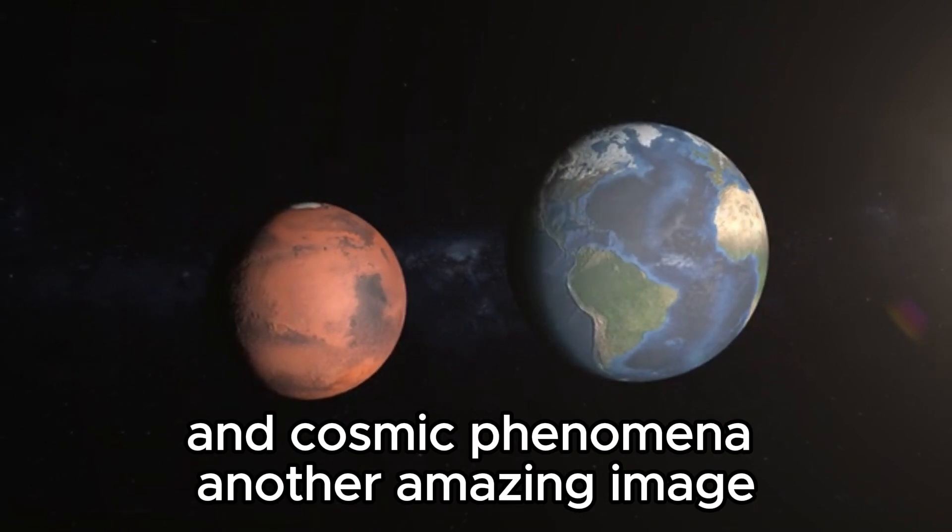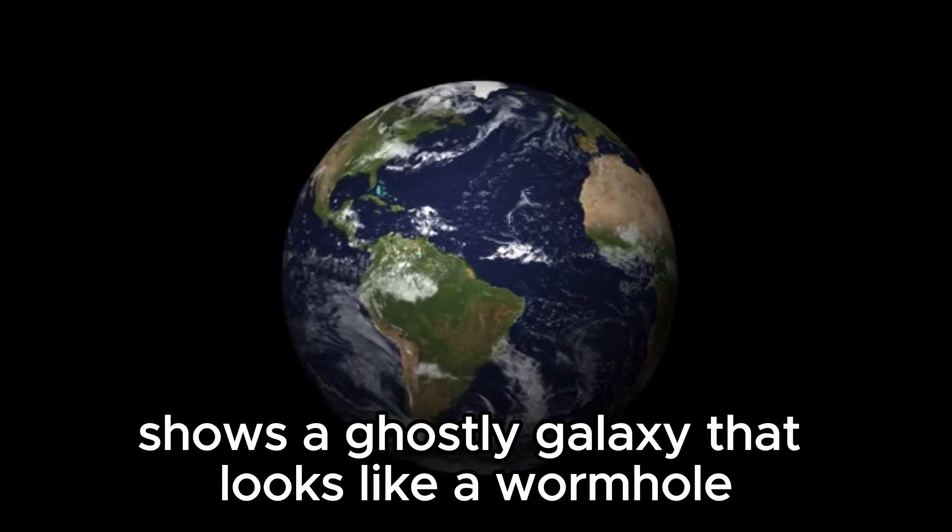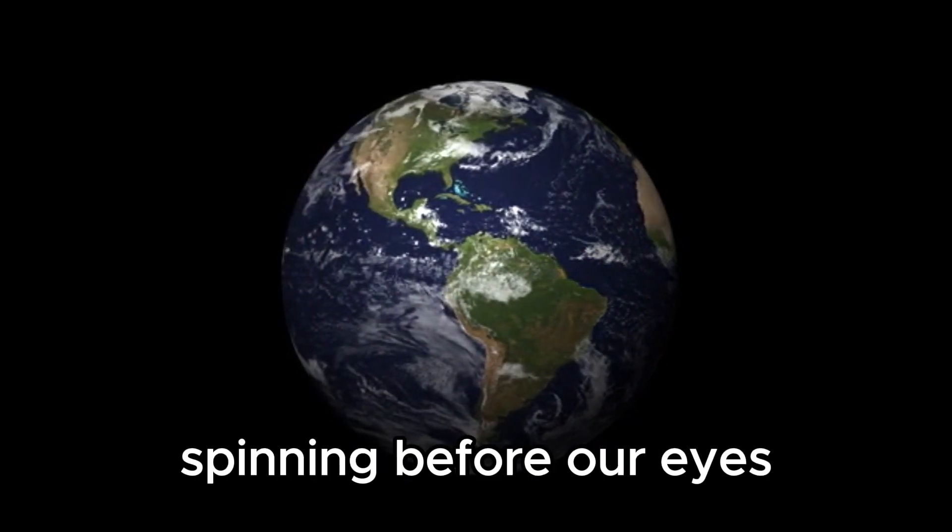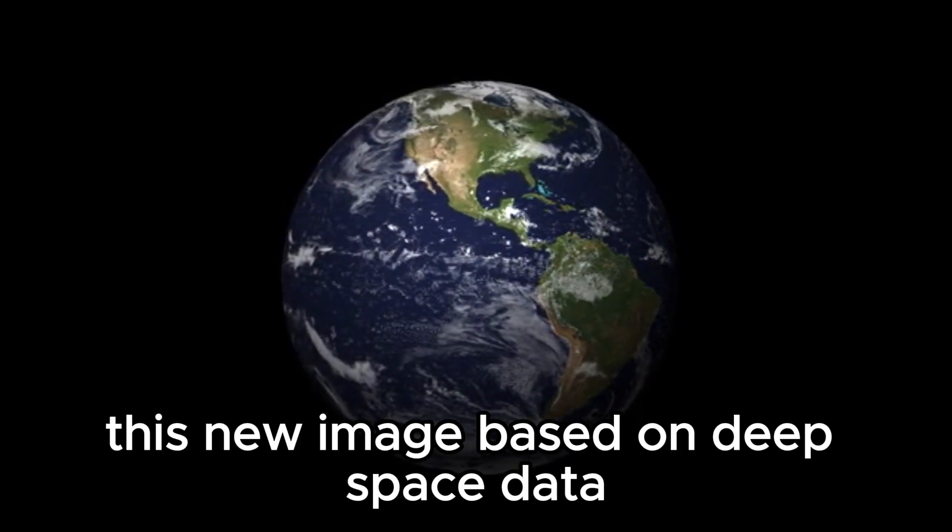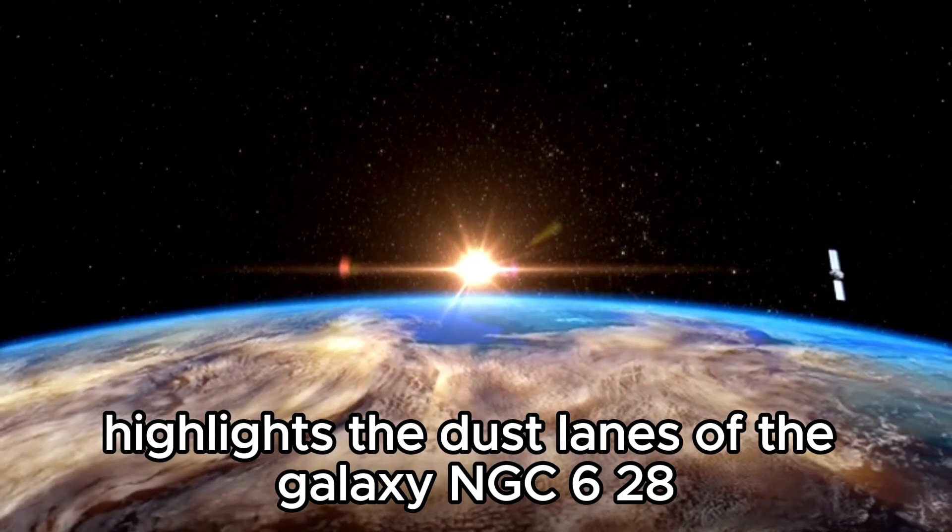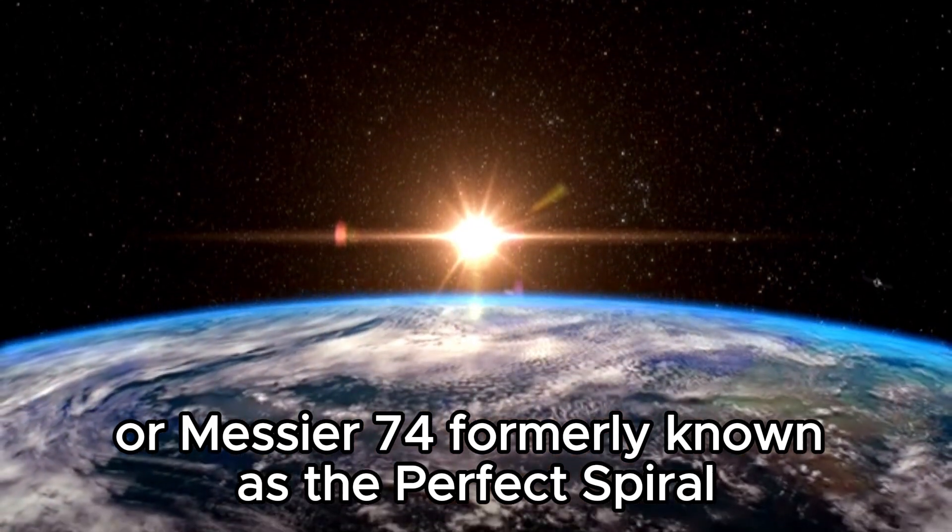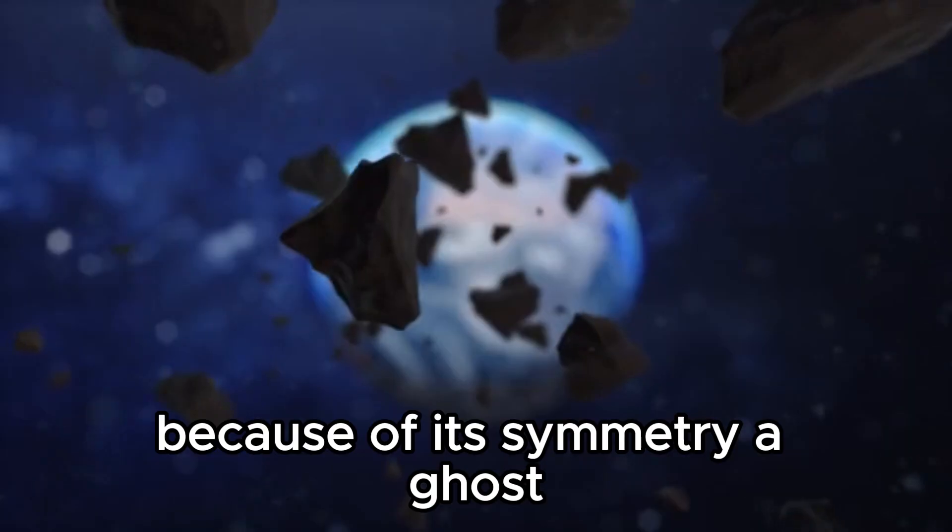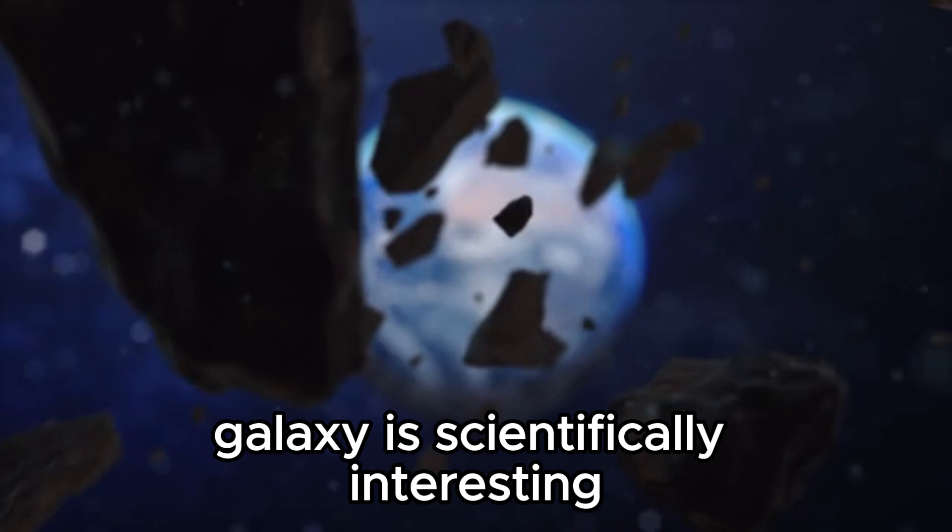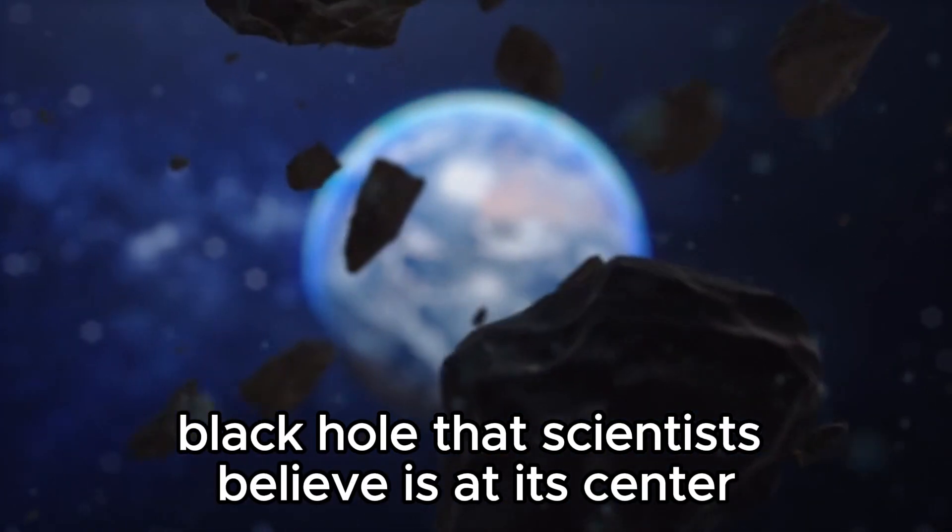Another amazing image taken by the James Webb Space Telescope shows a ghostly galaxy that looks like a wormhole spinning before our eyes. This new image, based on deep space data, highlights the dust lanes of the galaxy NGC 628, or Messier 74, formerly known as the perfect spiral because of its symmetry. A ghost galaxy is scientifically interesting because of the intermediate-mass black hole that scientists believe is at its center.